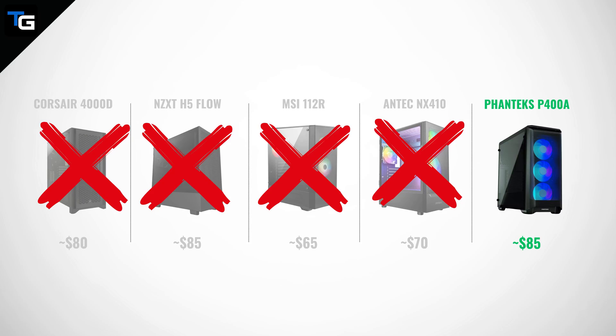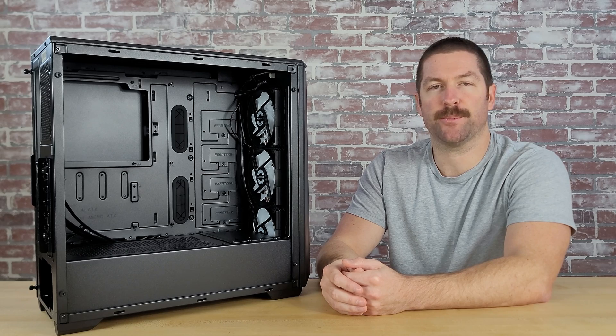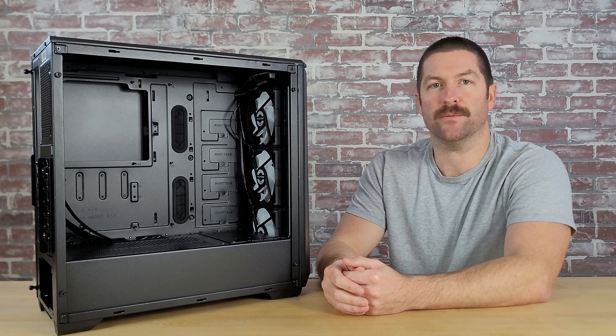So taking all of that into consideration, we thought the P400A would work well for our build, and it is the case we ended up choosing. At $85, that leaves us with about $70 total left to spend on our power supply. I think we'll need to go a little over that to get a quality unit to power this build, probably somewhere between $80 to $90, so we will likely end up slightly over our $1,000 budget. In the next video, we'll go over power supplies and what you need to consider when you choose one for a new PC build. We'll see you there.